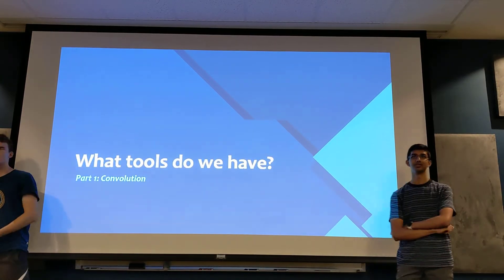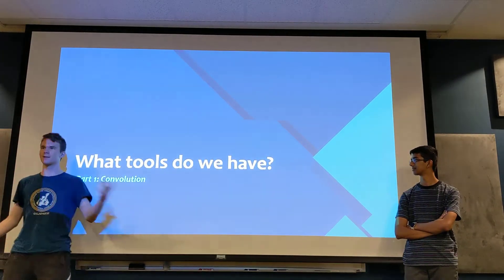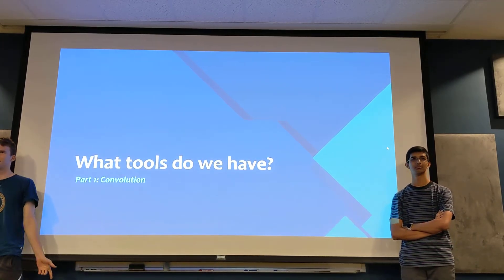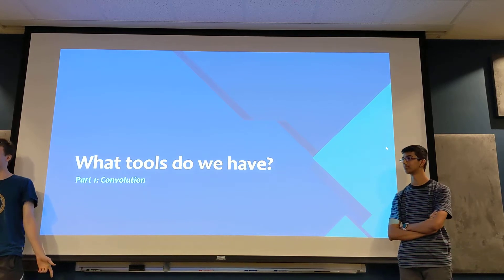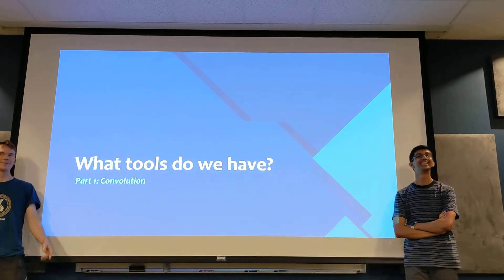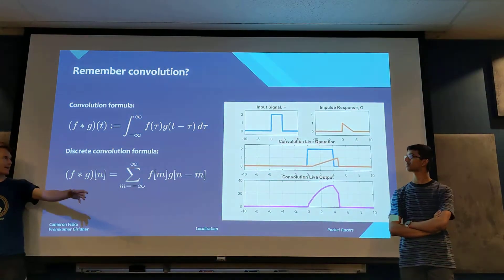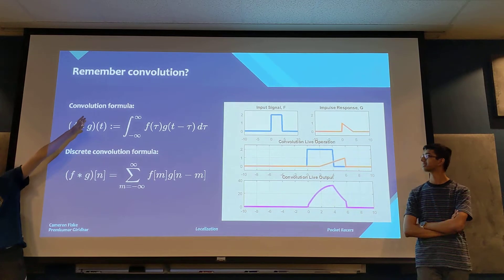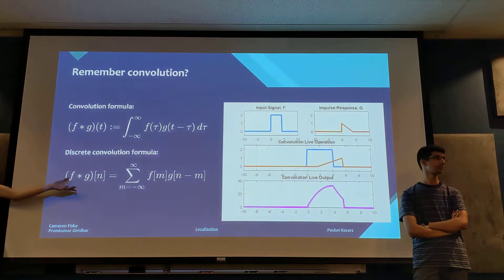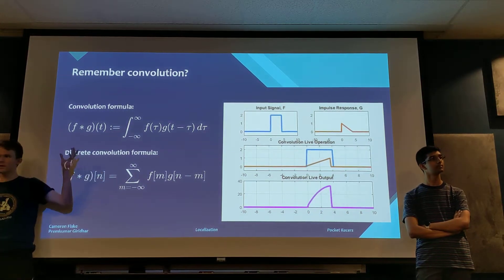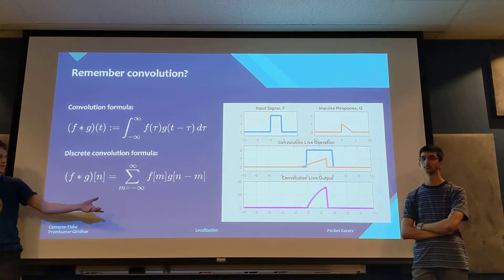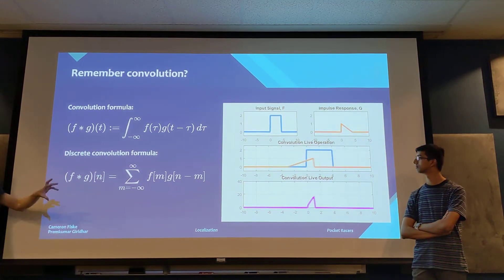The main tool we're going to use is called convolution. This is what convolution means in math terms. The top equation is a one-dimensional convolution for continuous signals, and the bottom is for discrete signals. We're not really going to use this full mathematical definition. What's important is the intuition of the flip and the drag.